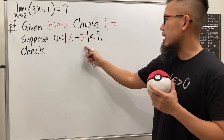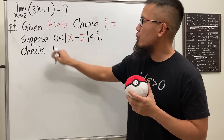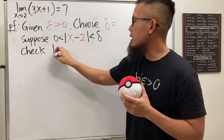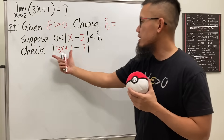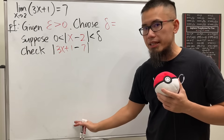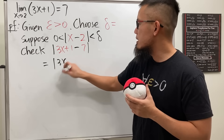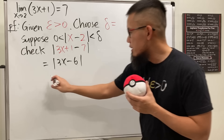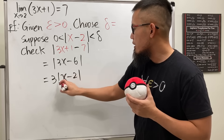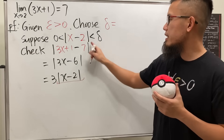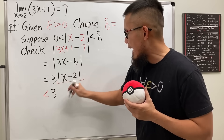We've finished about two and a half steps already. Now you check the absolute value of the function minus the limit: we write down |3x + 1 - 7|, and we hope to show this is less than epsilon at the end. Do some algebra: 3x + 1 - 7 is just 3x - 6, and we can factor out the 3, so this becomes 3|x - 2|. We see that |x - 2| is less than delta, so we can replace it: this becomes 3·delta.